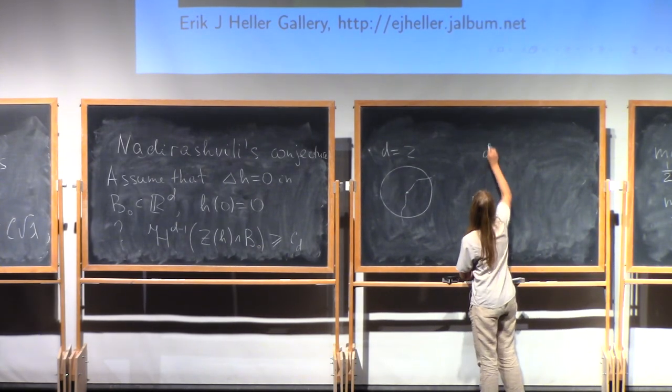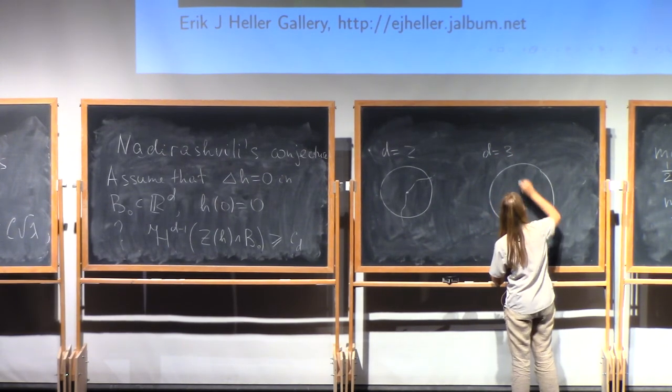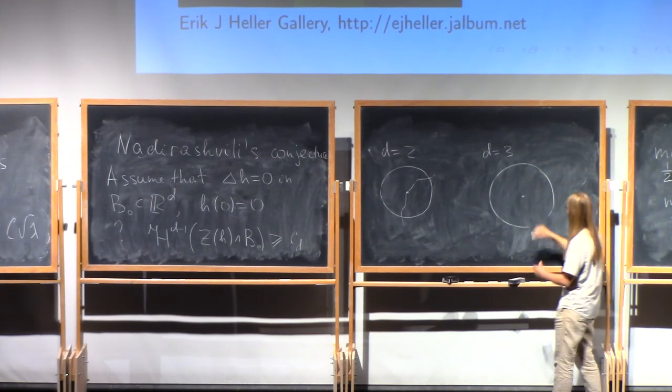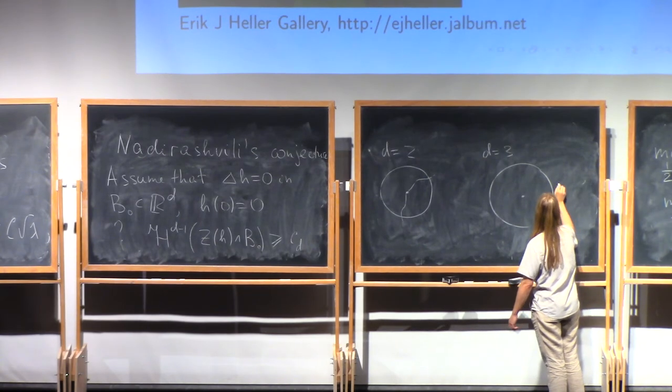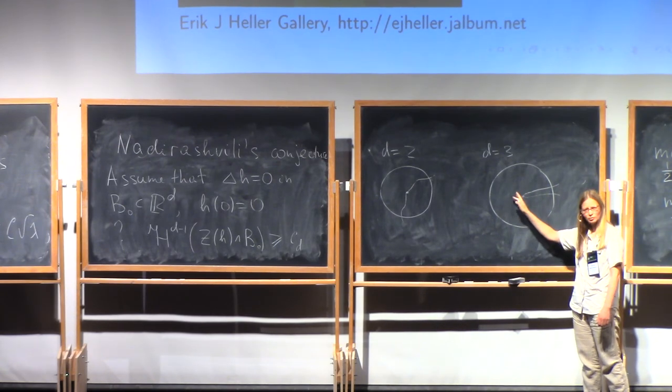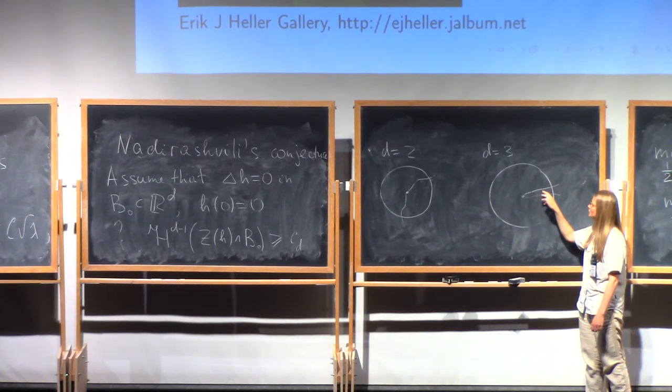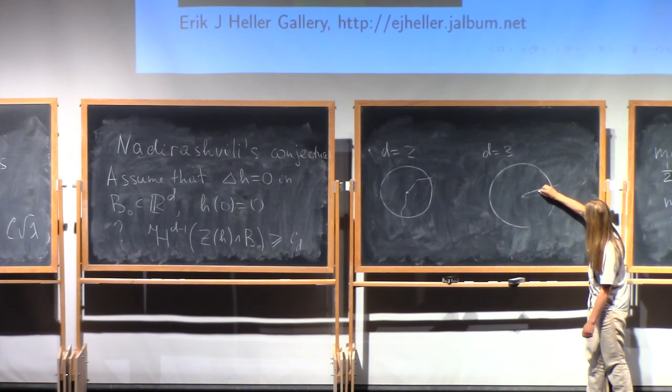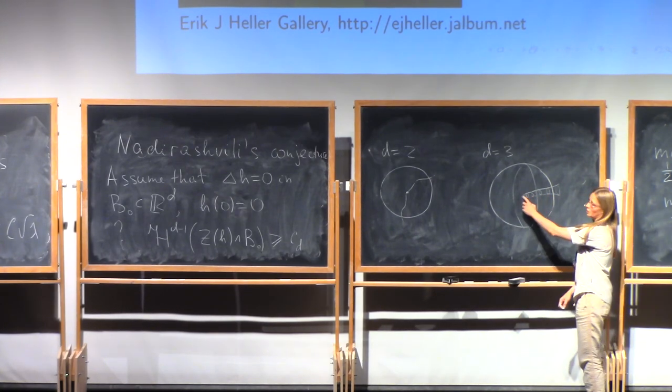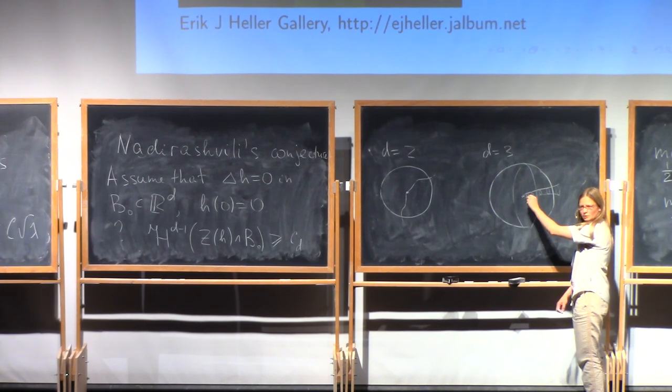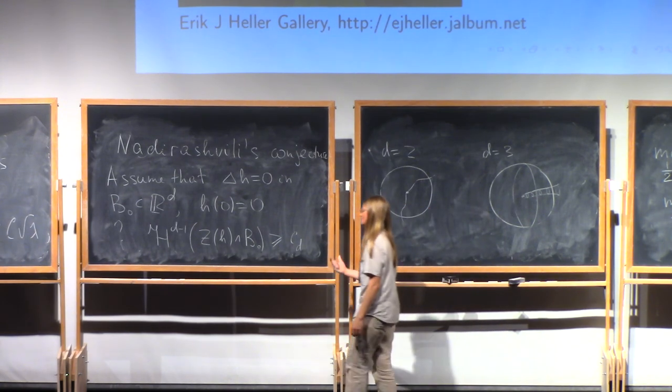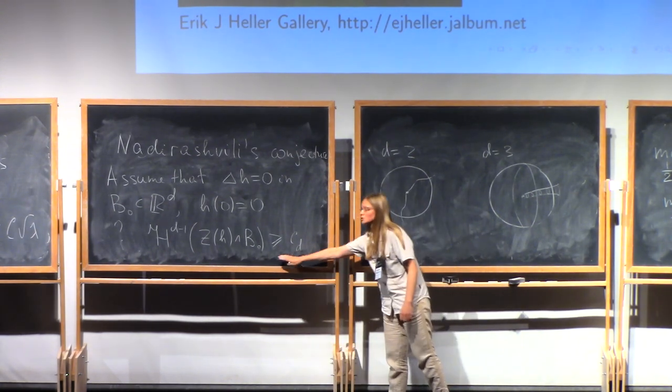But in dimension three, you're now looking at the surface that goes through this point. And you can draw a surface, even surface that is zero set of a harmonic function that is very narrow. And the area of this surface is very small. So now in dimension three, you can touch the zero by a very small finger here. And there is no simple argument showing that this inequality is true.